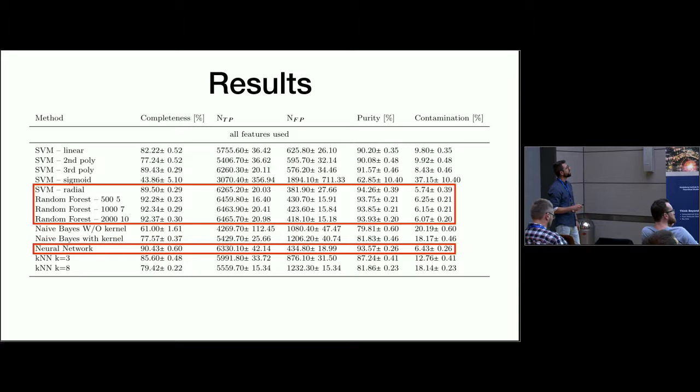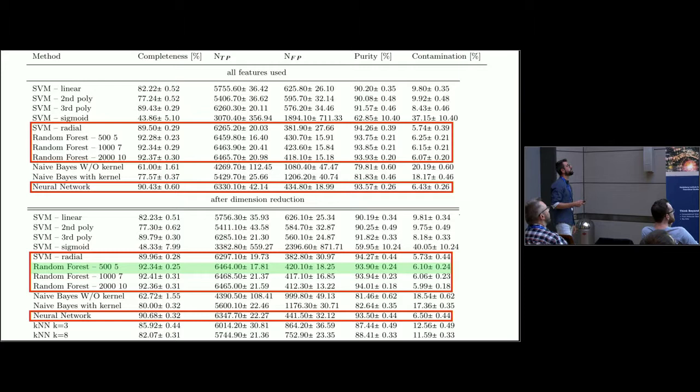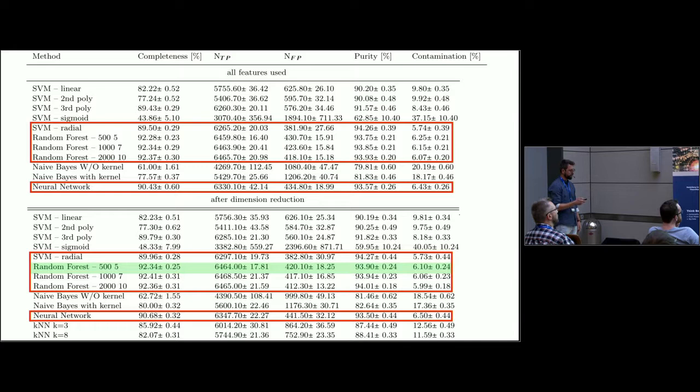The results are here. I highlighted with red boxes which we found to be the best one using all the features. SVM, random forest, and neural networks worked really well. After we tested it on the reduced dimensionality feature space, we found also that the results are quite similar. In the end we chose that random forest is fast enough and good enough to use for classification of the unknowns. The completeness is like 92.3% and the purity is high enough and the contamination is quite low.